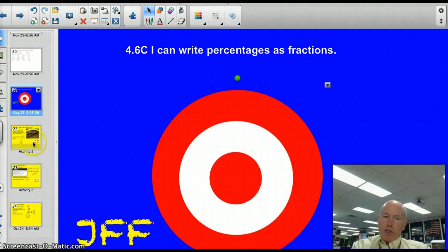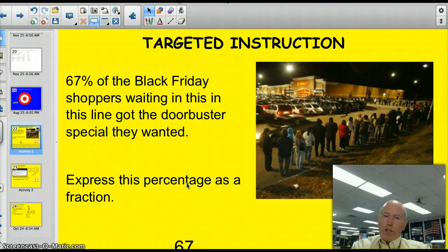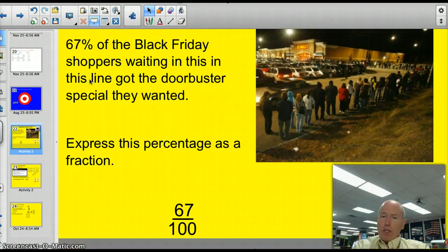We take a look at this question here. Which 67% of the Black Friday shoppers waiting in this line got the door buster special they wanted? Express this percentage as a fraction. Well, we know that percents are always the number per 100, so I can just take and put that number over 100 and say 67 out of 100 people. And then I reduce if necessary. In this case, I'm just good with 67 out of 100.